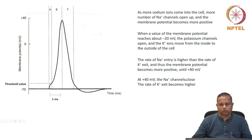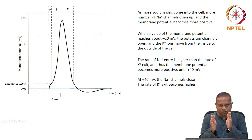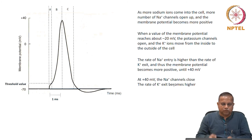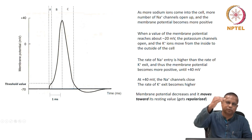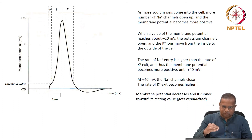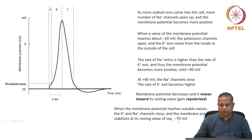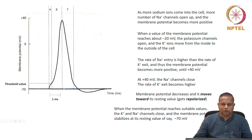The membrane potential rises all the way from minus 70 millivolts to about plus 40 millivolts. At plus 40 millivolts, the sodium ion channels close. The potassium channels are still open and potassium continues going out, so the rate of potassium exit becomes higher. Therefore, the membrane potential starts decreasing again, moving towards its resting value — this is called repolarization. The membrane then stabilizes at its resting value of minus 70 millivolts after an undershoot.